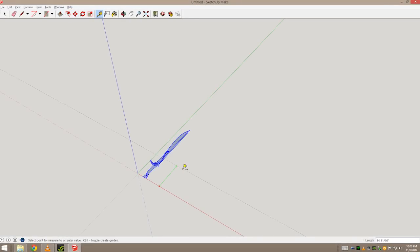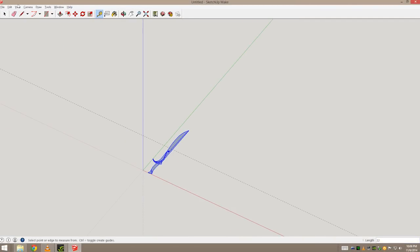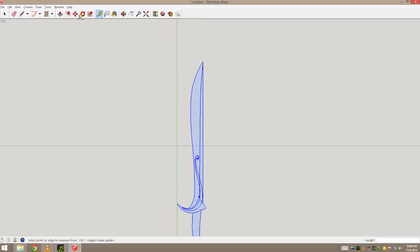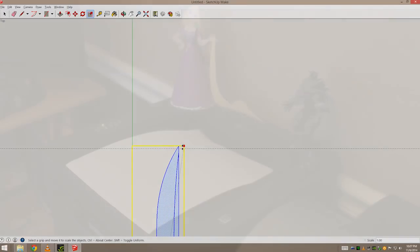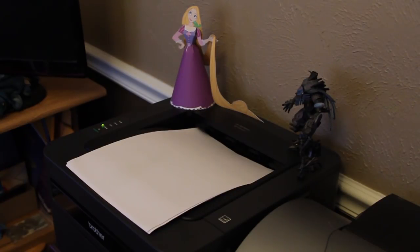I started by taking the SketchUp file and scaling it down so it was about 22 inches long. I thought that was a good size for a children's sword, and then I printed out the pattern full scale.